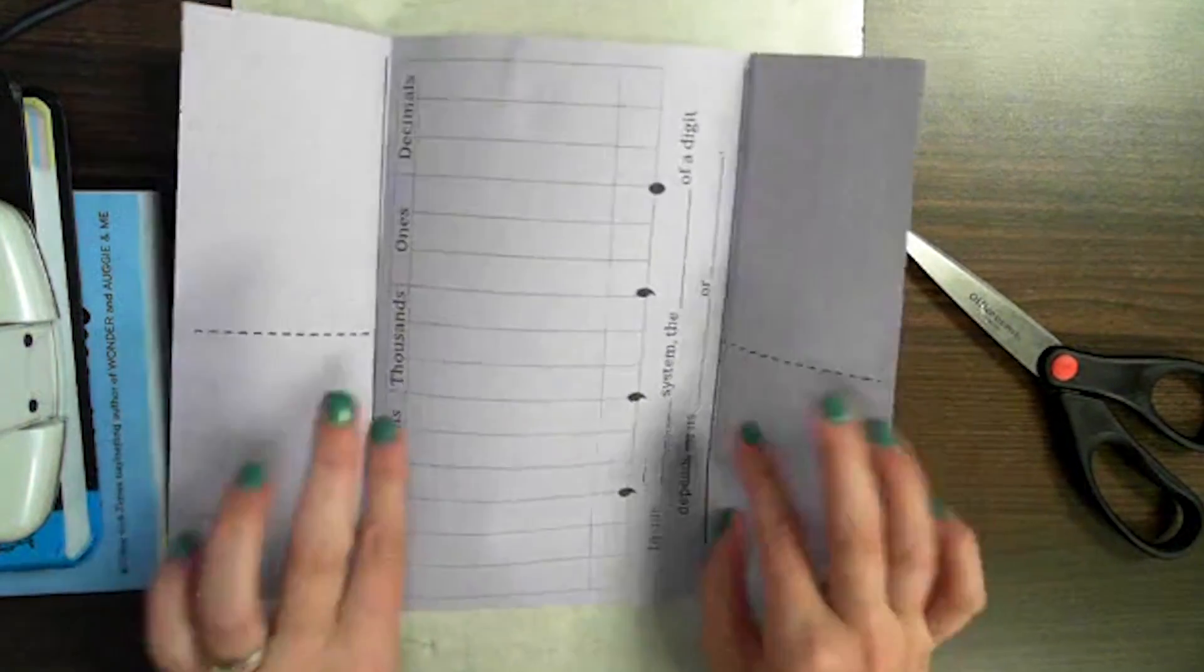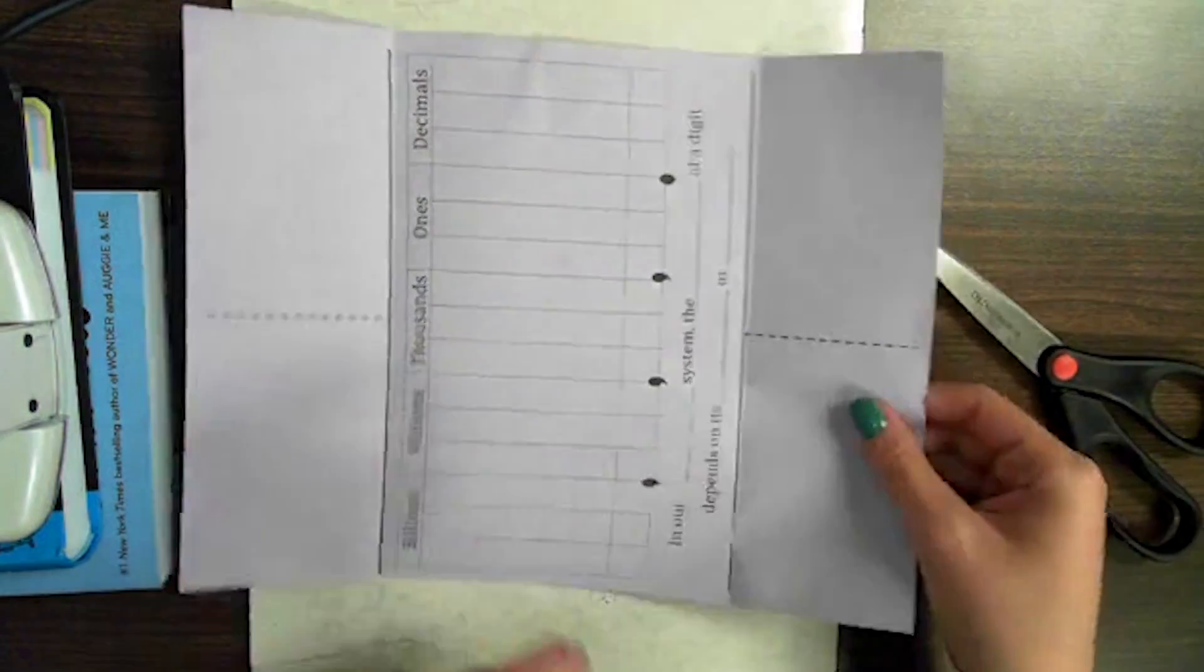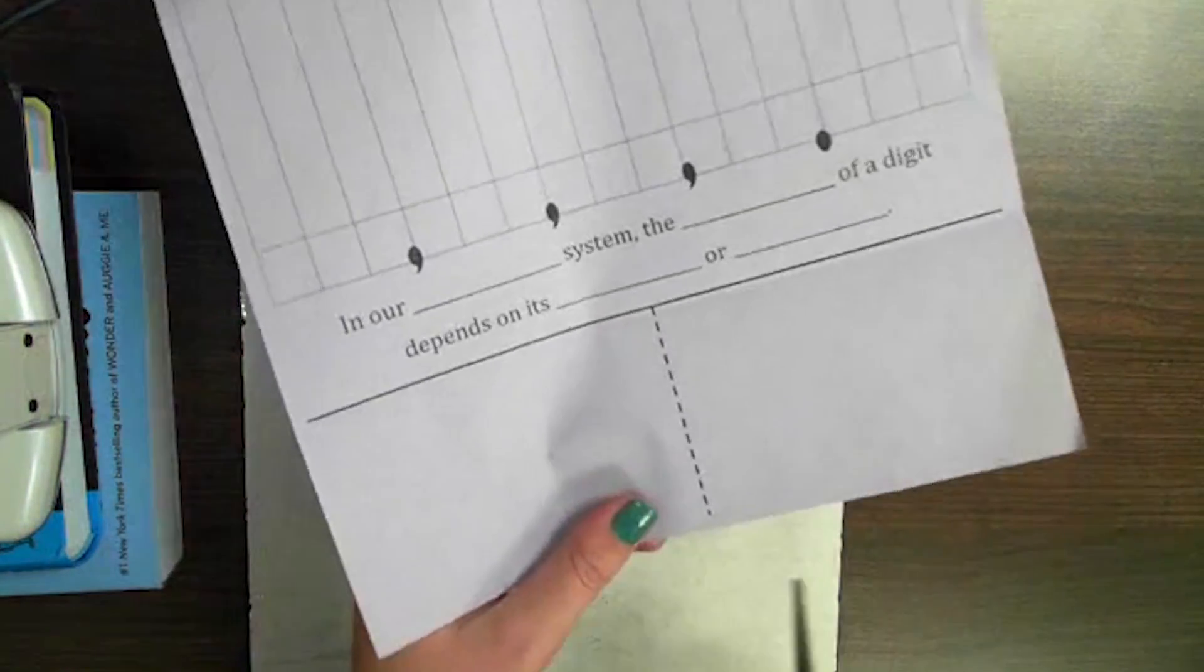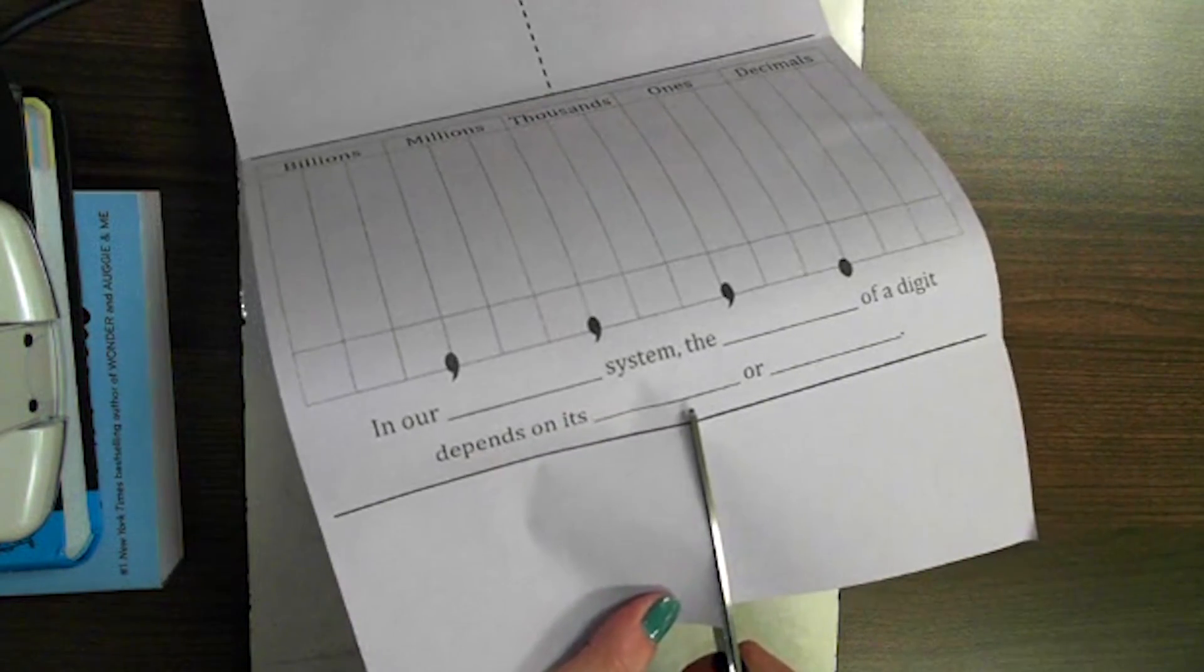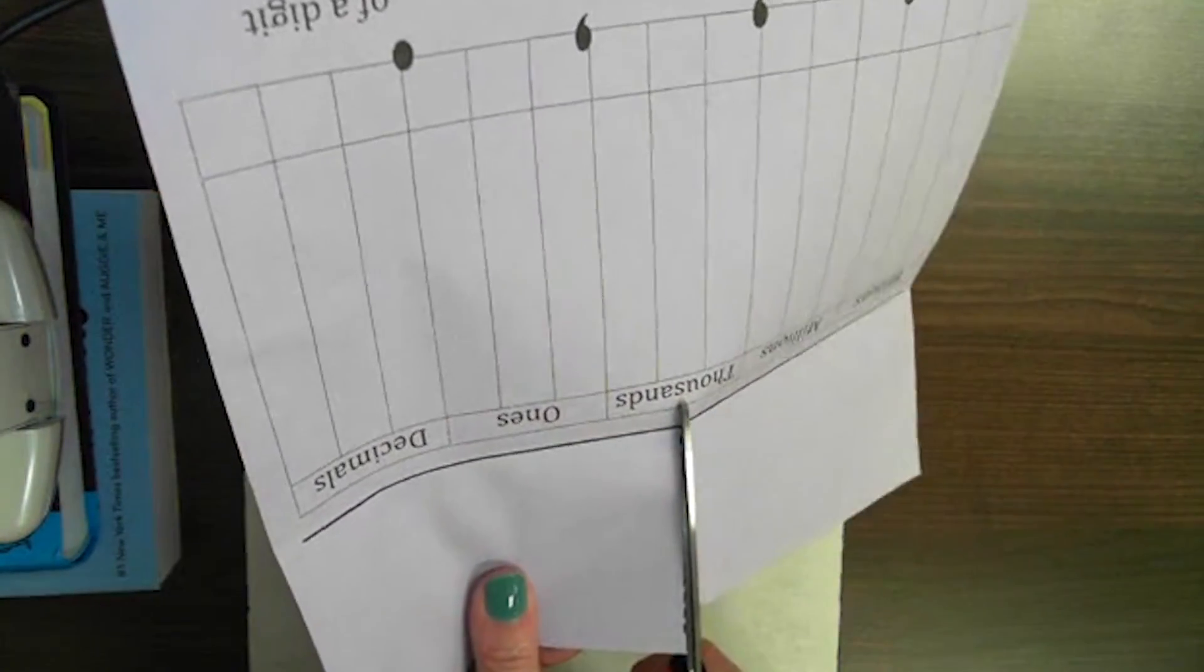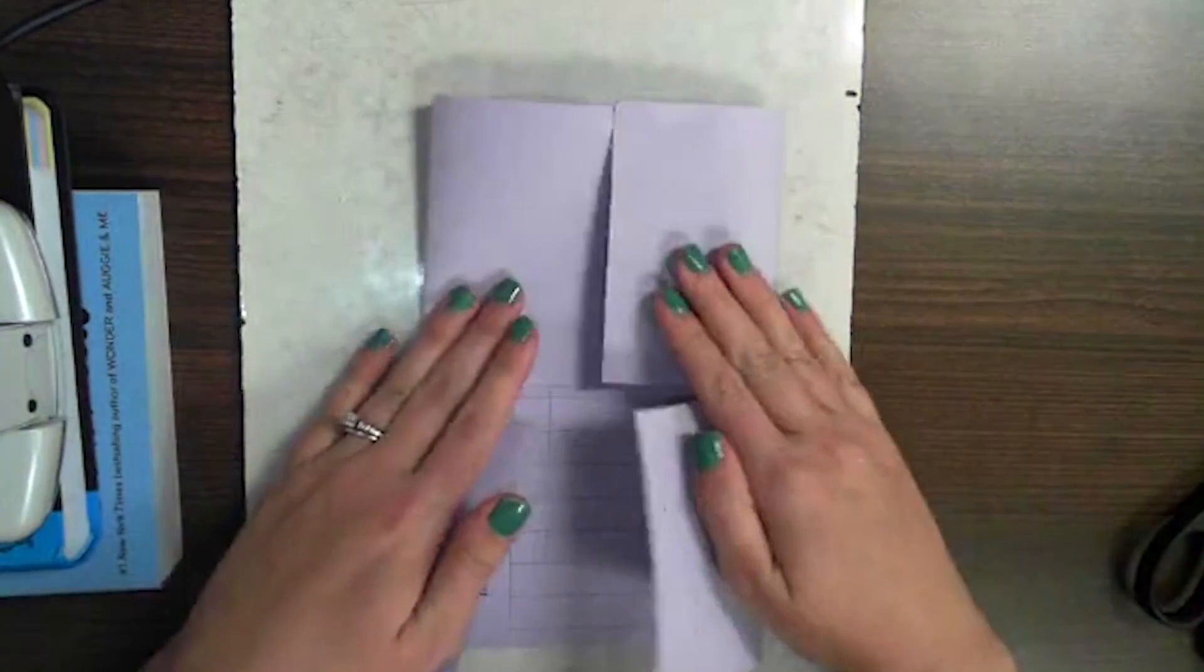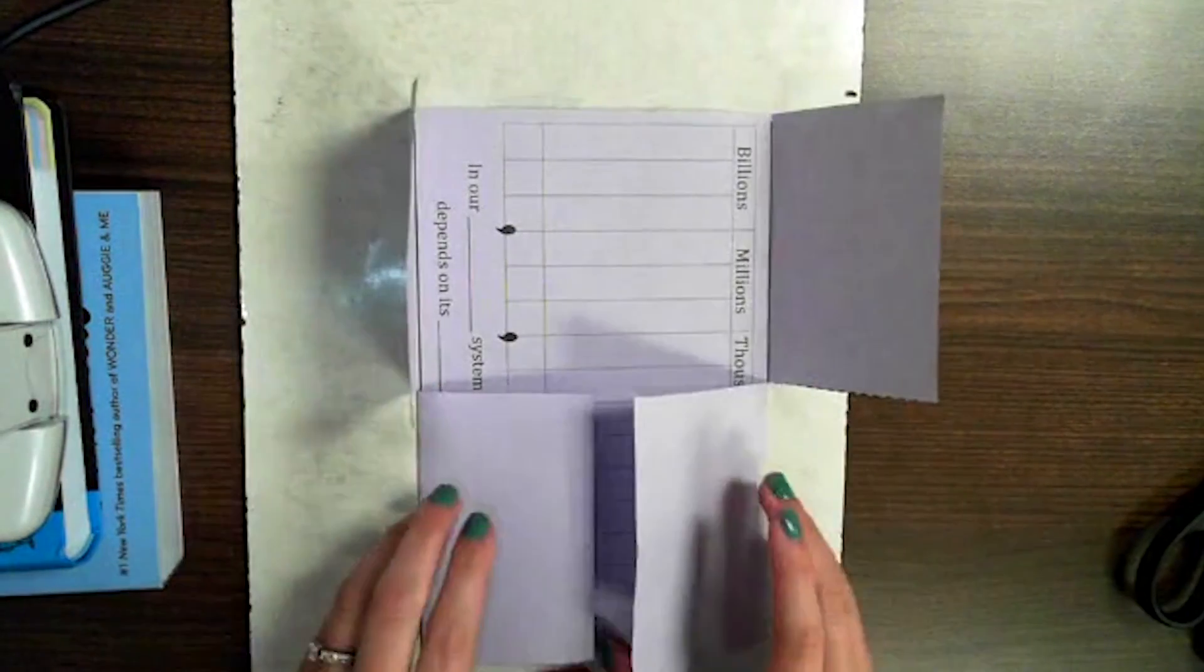Then you're going to open it back up and make two small cuts along the dotted lines. Make sure you don't go too far. Okay, so your foldable should look like this with four different flaps.